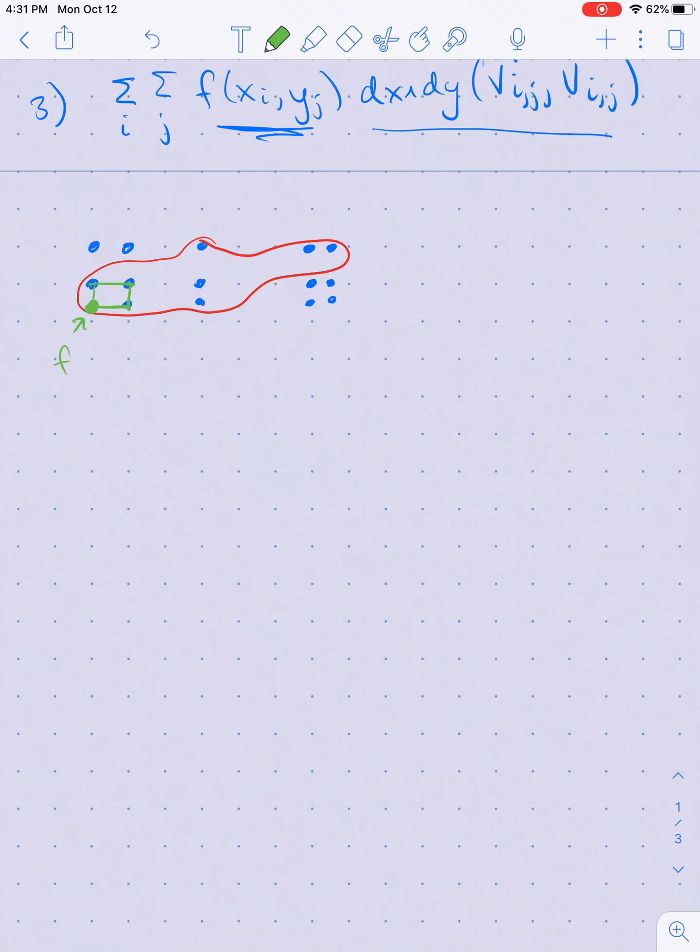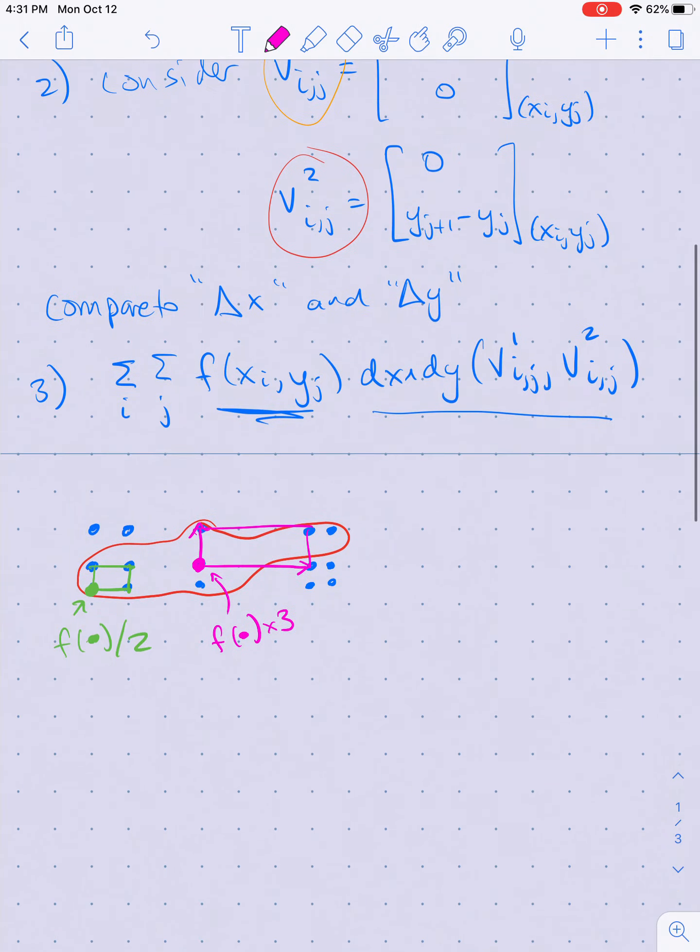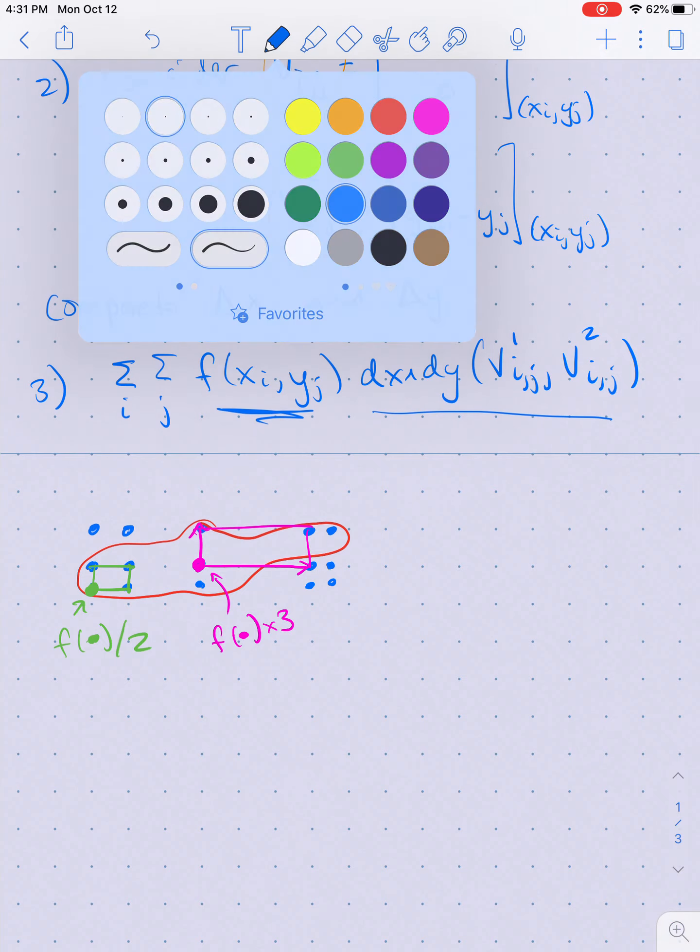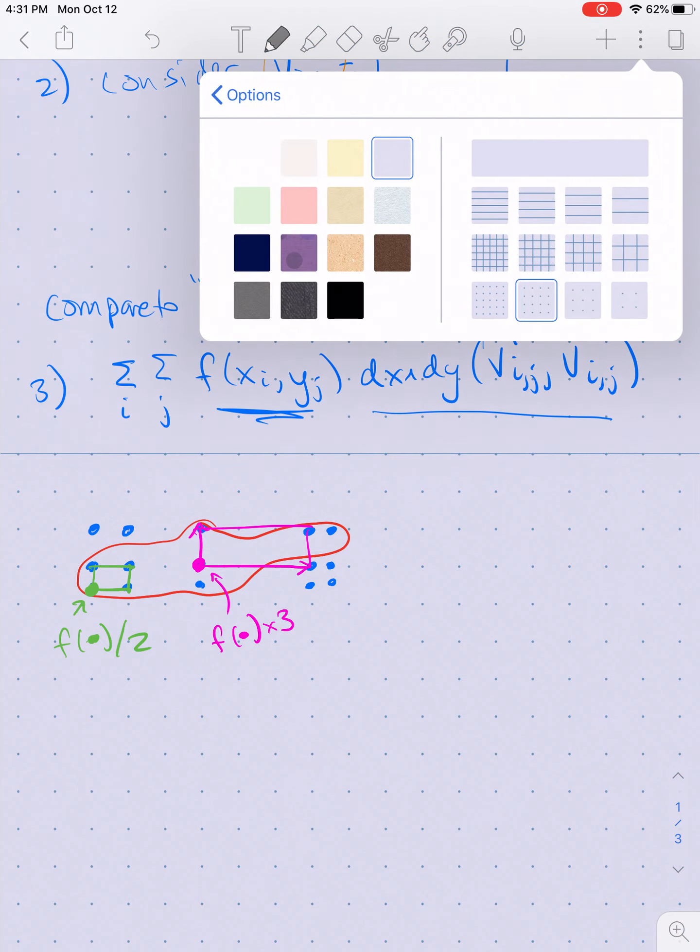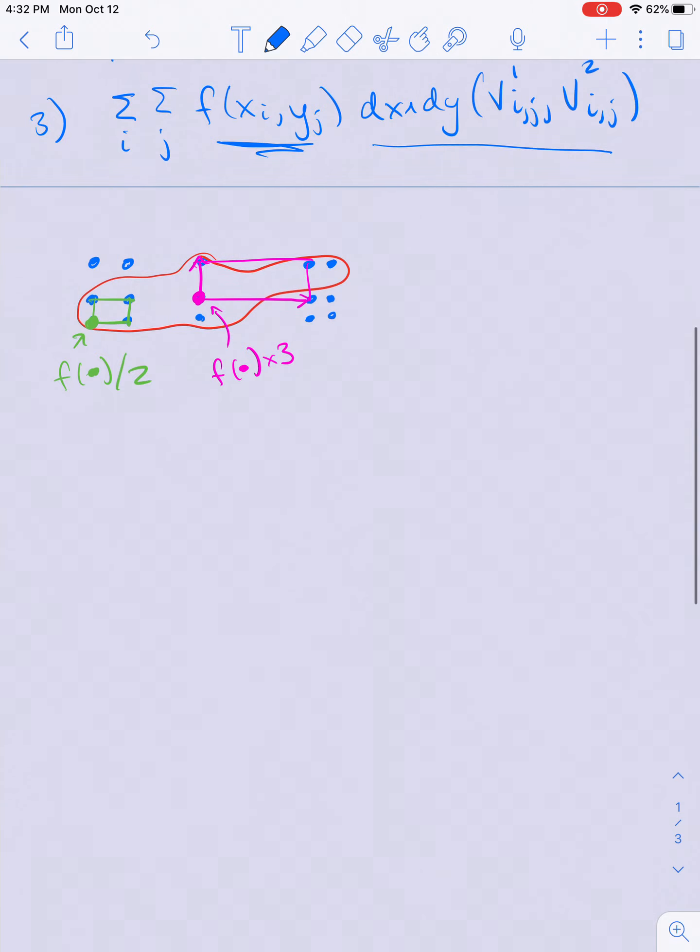What I'm doing is just taking—for this point here I'll be computing the area of this square and multiplying it by f at that point, so the contribution will be like f at this point times one-half. The contribution at this point here will be much larger because now I'm taking the area of this rectangle, so the contribution here will be f at this point times three.